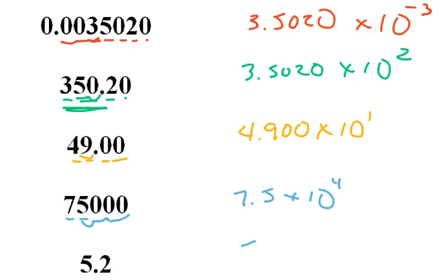And the last one here, I have 5.2. Now that actually is already between 1 and 10, so I can just leave it alone, 5.2, or I can say 5.2 times 10 to the 0.